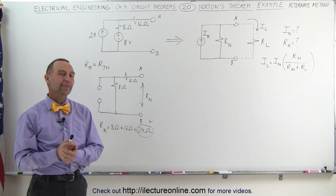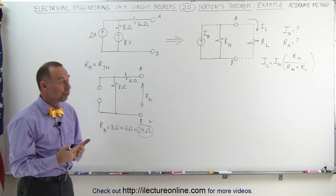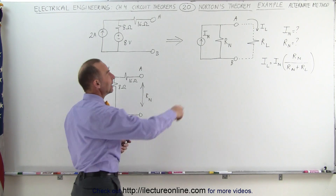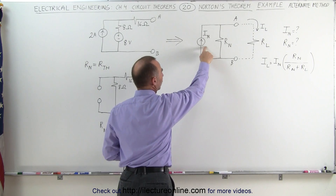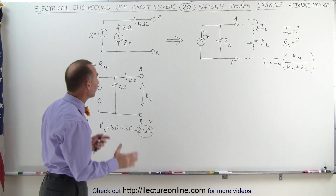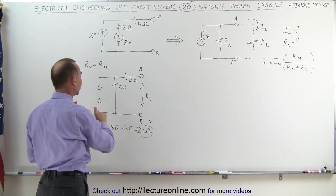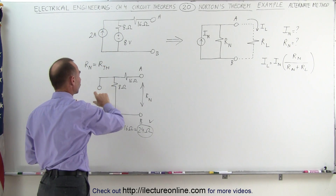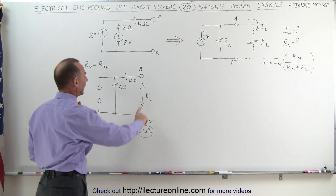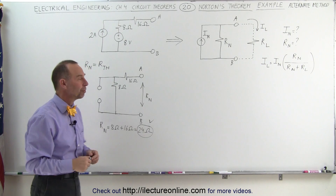Welcome to Electurnal Line. In the previous video, we showed you how to calculate the equivalent Norton circuit by finding the equivalent Norton current and Norton resistance. We know that finding the Norton resistance is the same as finding the Thevenin resistance, which is simply removing any current sources and letting the voltage sources go to zero, then measuring the resistance across the open terminals from A to B.